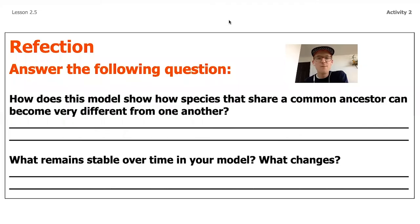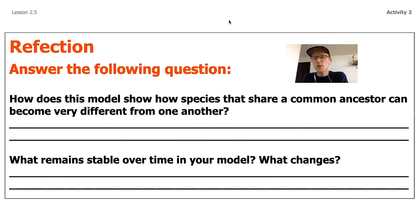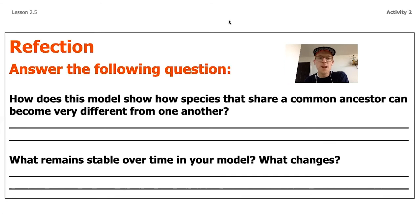We can see these descendants ended up having better structures for survival in their own environments. As we wrap up the simulation, we're going to move into our next activity. Hopefully this gave you a good visual for how those changes could build up over time. Now pause the video and think through two reflection questions: first, how does this model show how species that share a common ancestor can become very different from one another? Second, what remains stable over time in our model, and what specific changes did we notice?